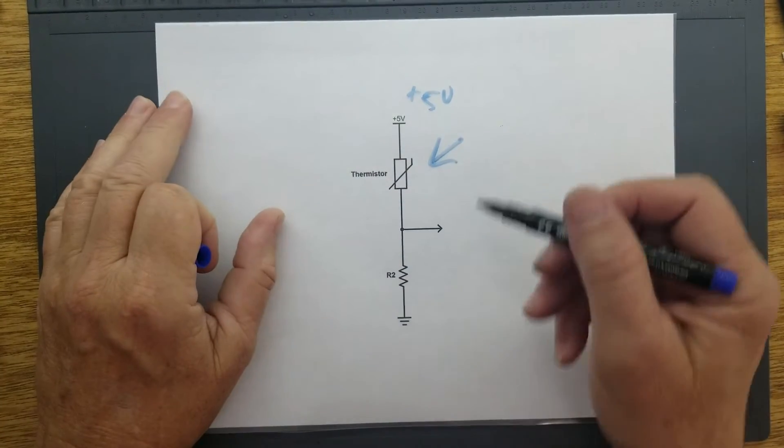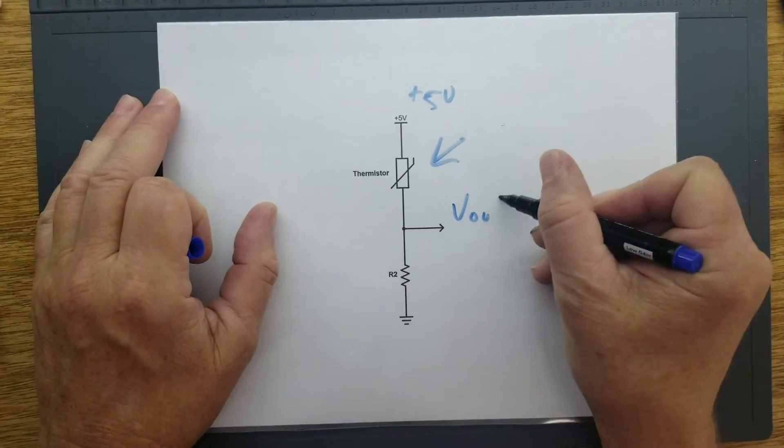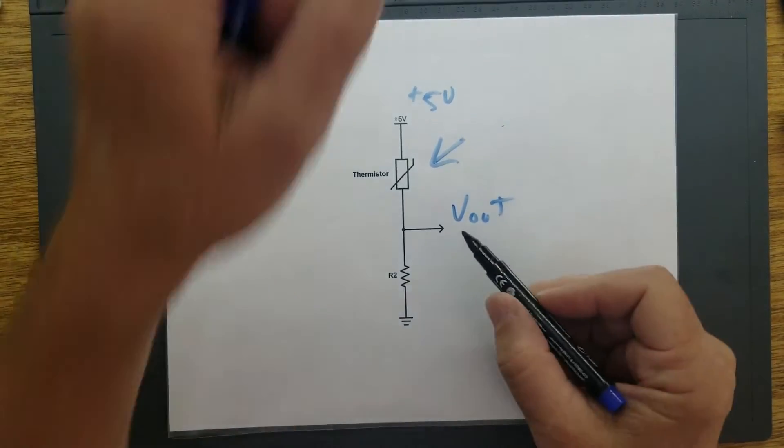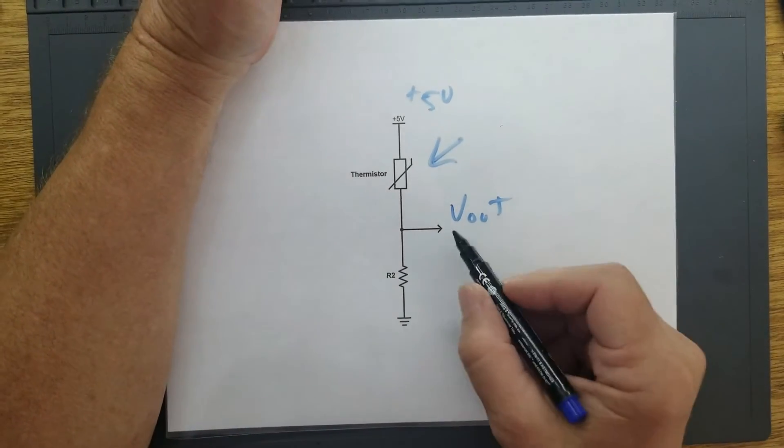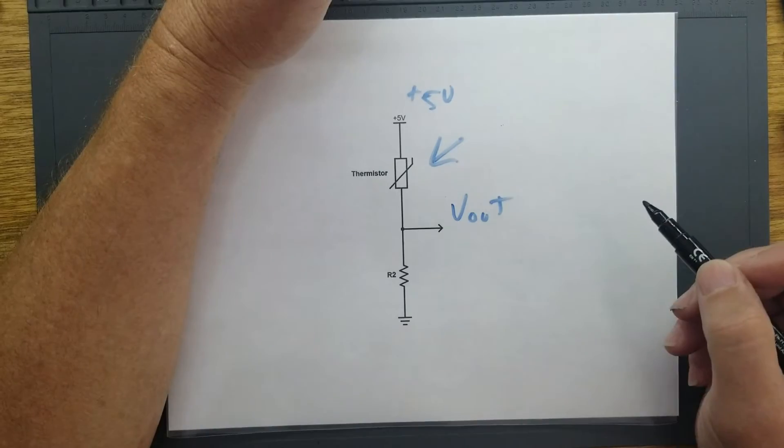What this causes is for this voltage right here, this is your Vout to the microcontroller. This voltage here will change with respect to any changes in this thermistor value.